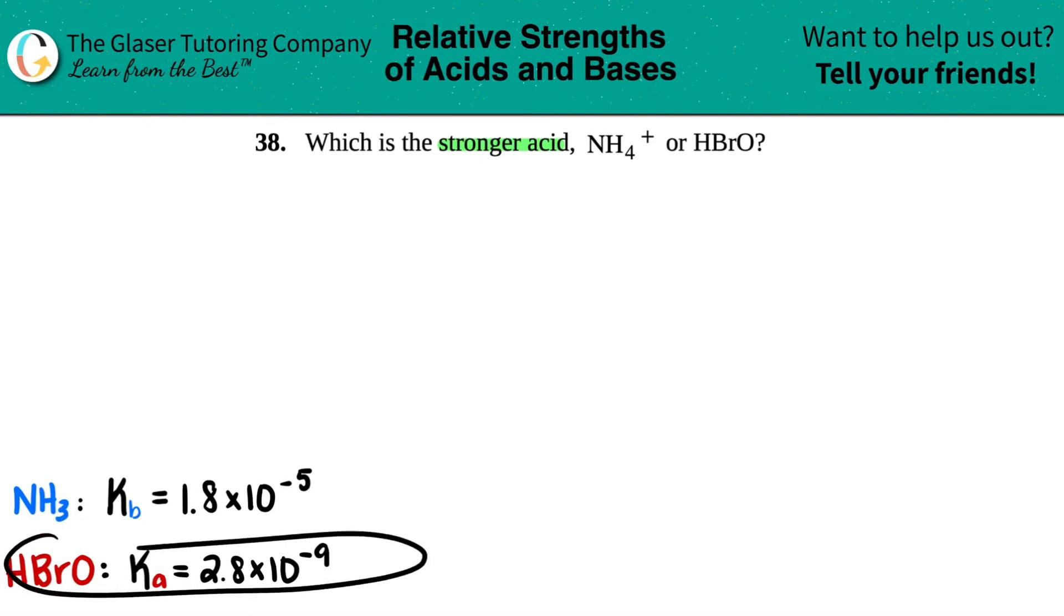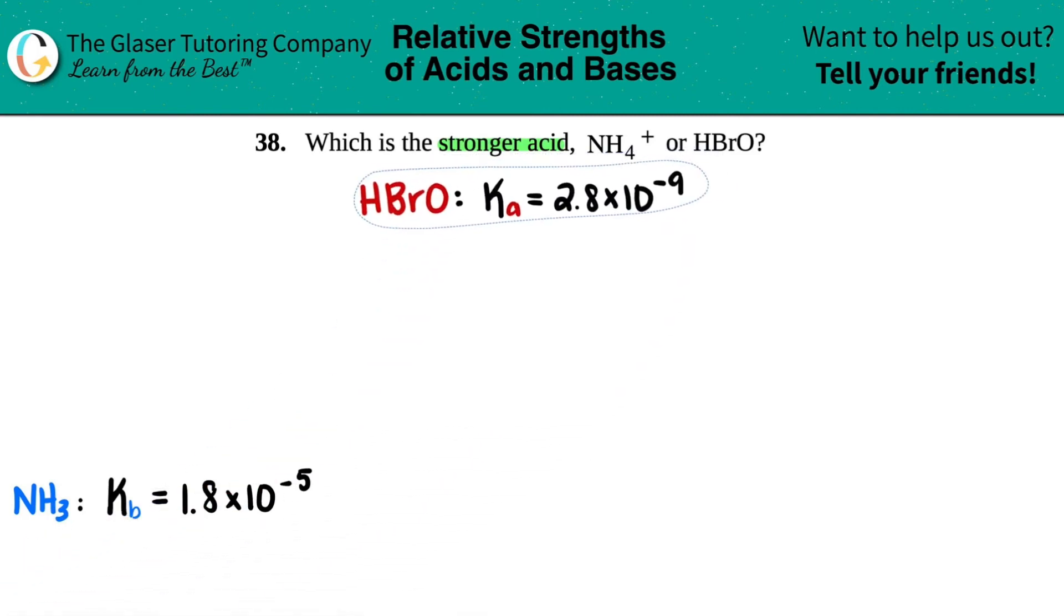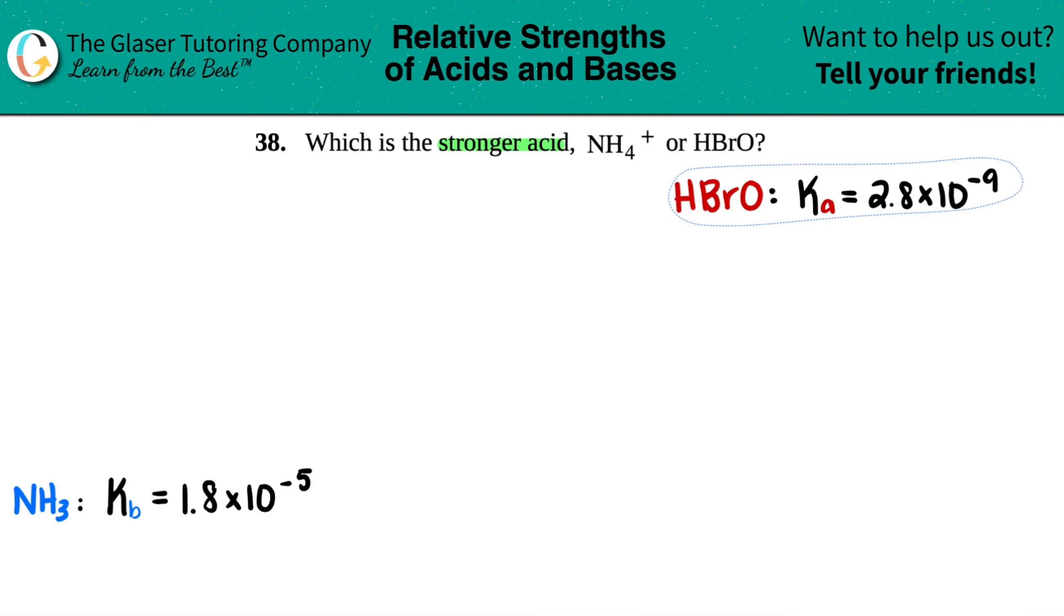So HBrO was right there, so this we don't have to worry about. They already gave us the Ka for HBrO. But now when I tried to find NH4 plus, there was no Ka value on the appendix, but I could find the conjugate base, NH3.